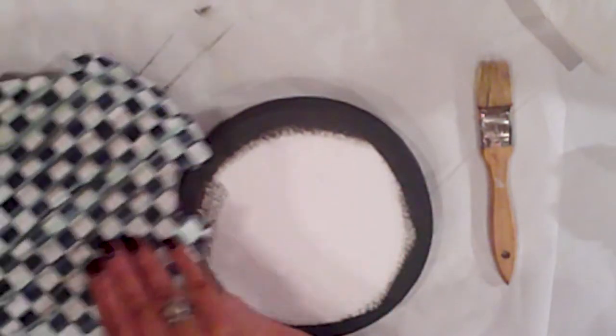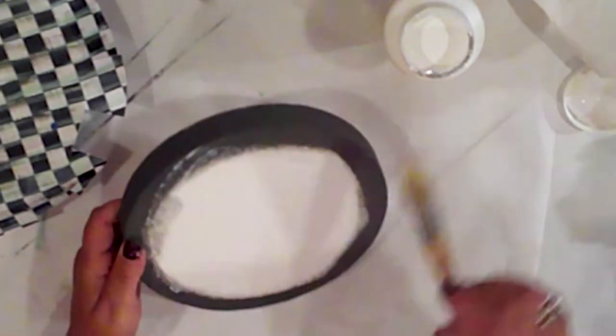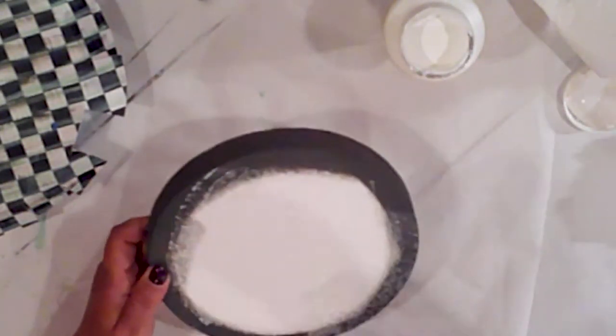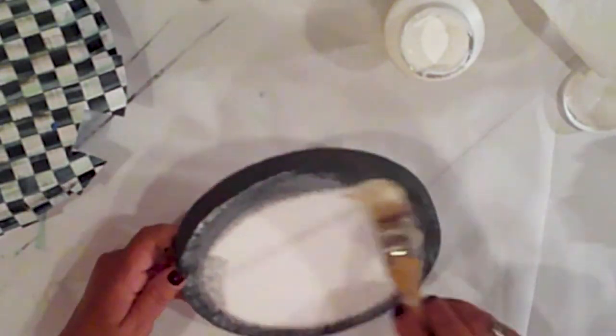I coat the top of the bottom disc and the back of the paper with Mod Podge. This is the checkered paper. And I place the paper on the disc, burnishing it with my hands. Once I fold up my flaps over the edge too.